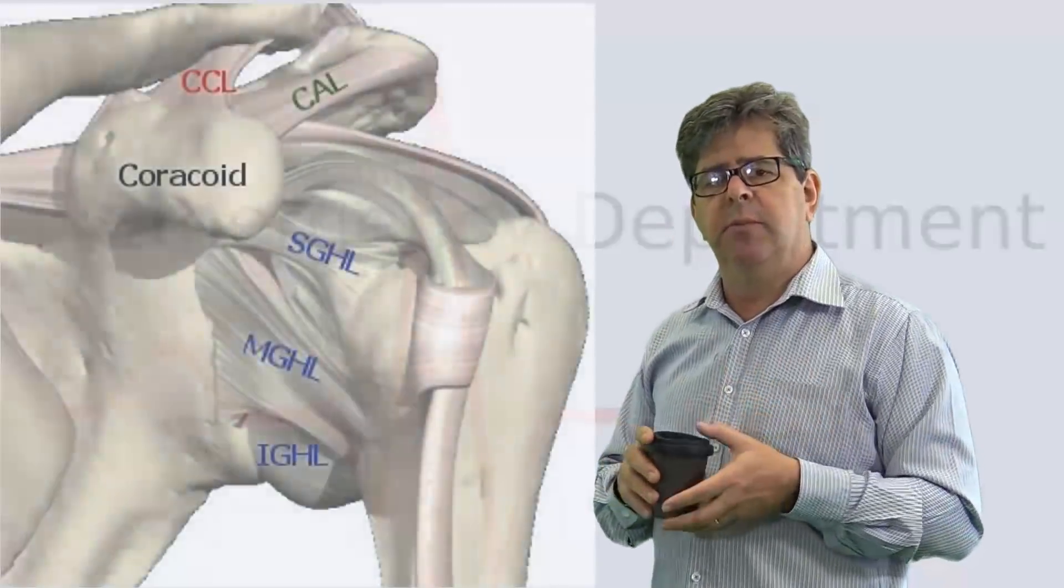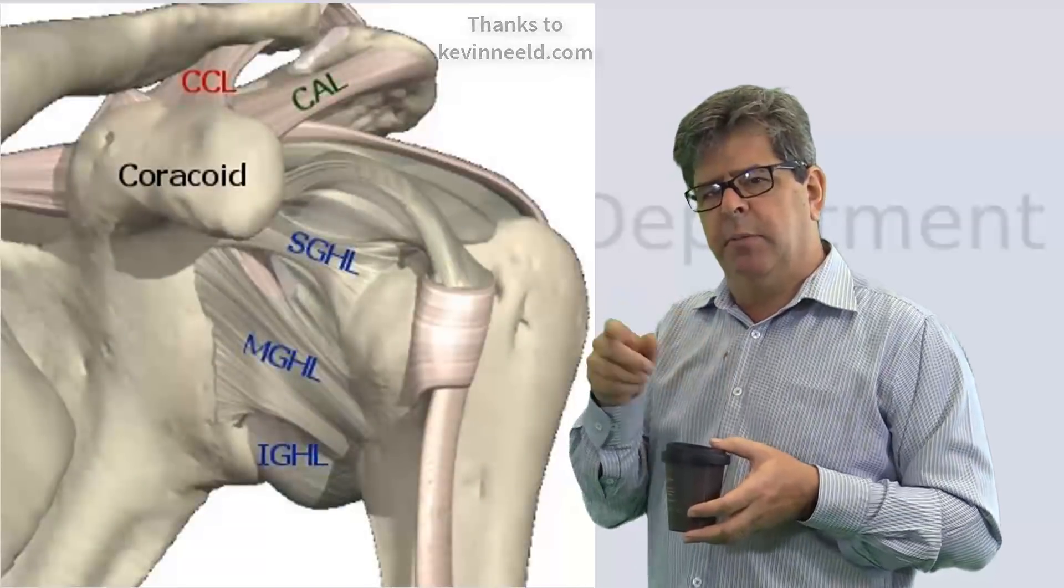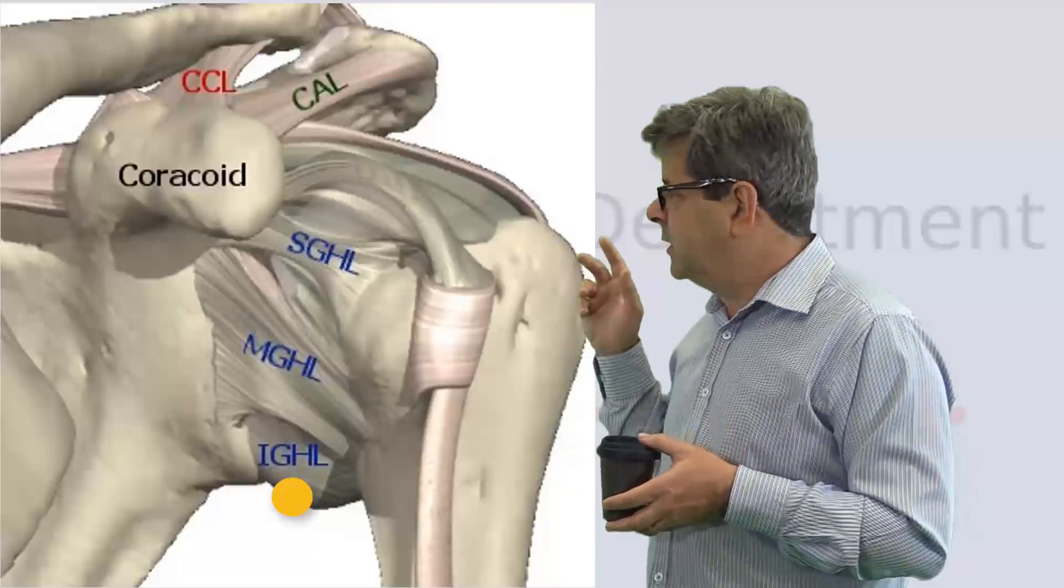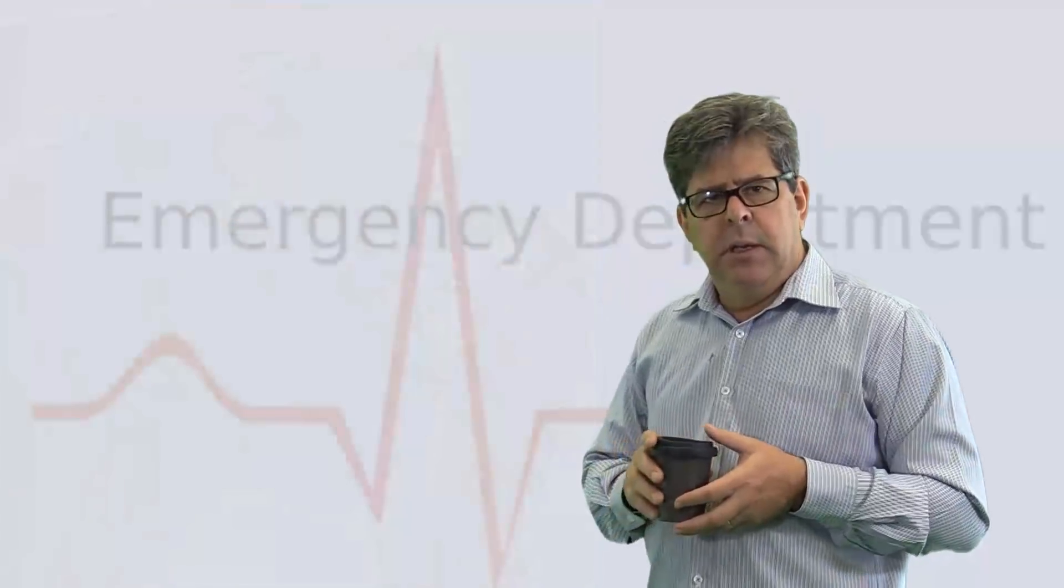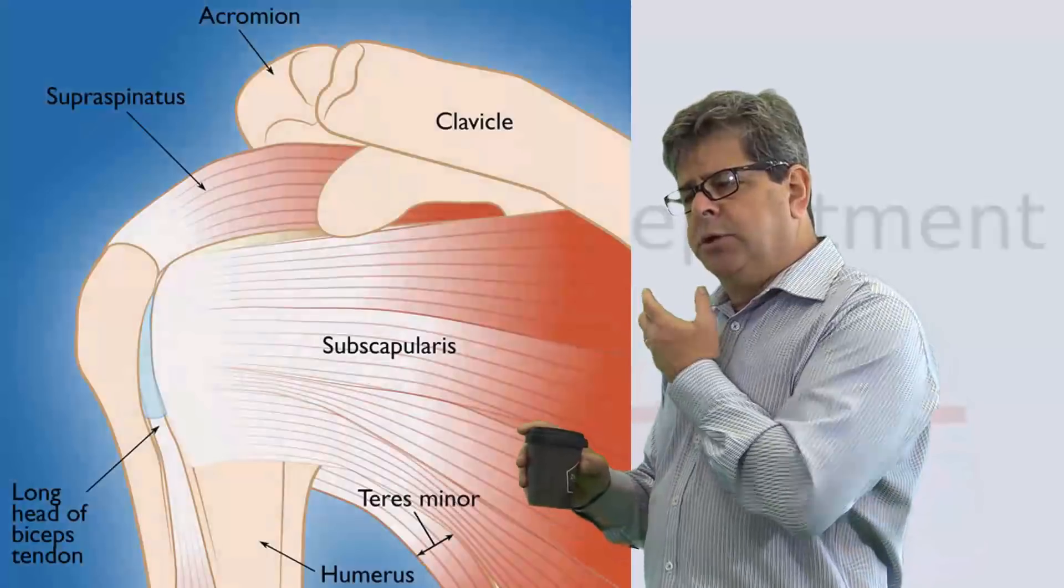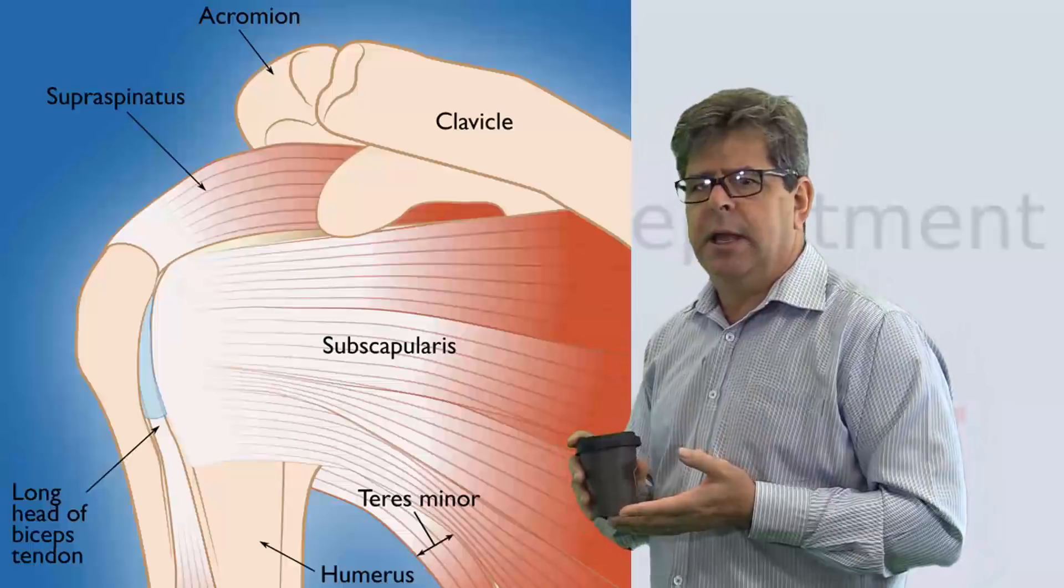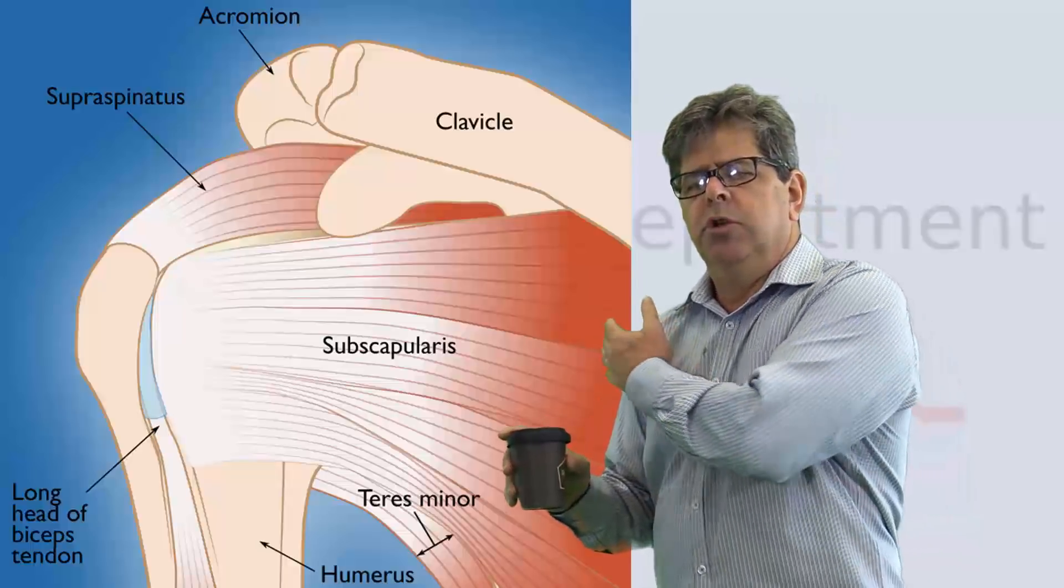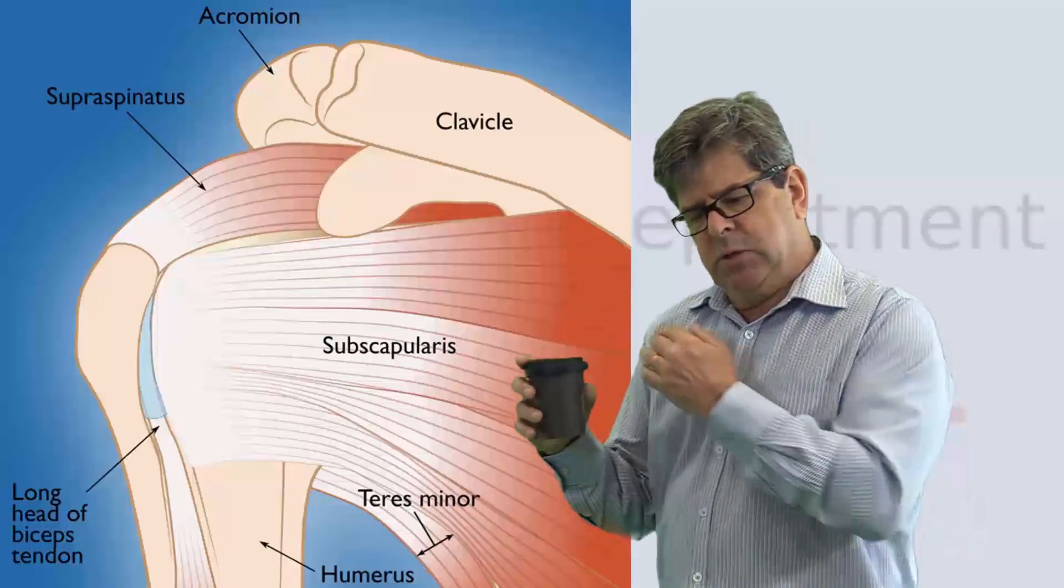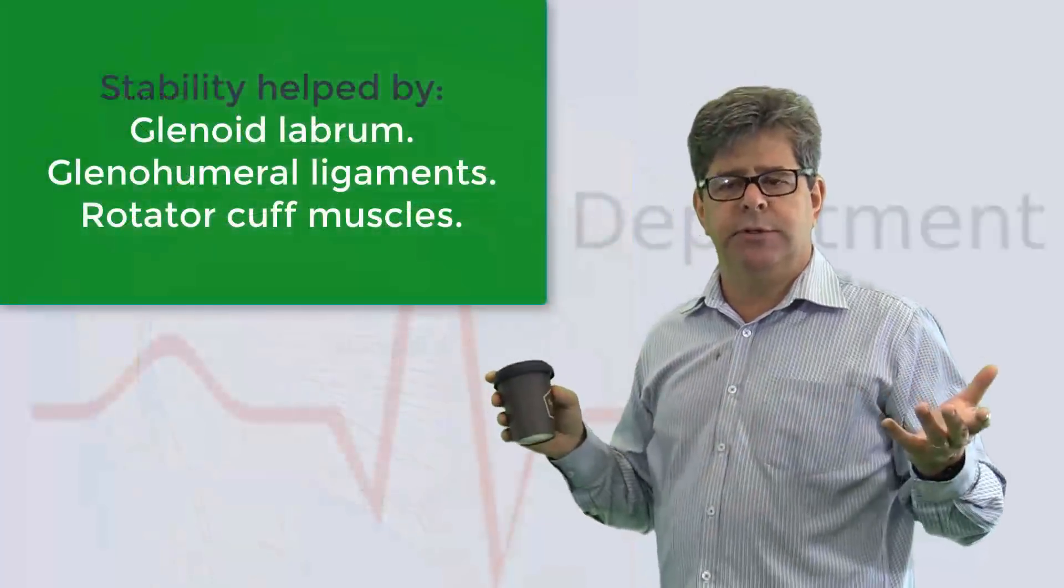Next, there's some glenohumeral ligaments anteriorly. The inferior - there's actually three of them for most people. Some people don't have the middle one. So superior, middle, and inferior, and the inferior is the most important, and you can see those ligaments there. The last and really very important is that the rotator cuff muscles - remember they're the supraspinatus, infraspinatus, teres minor, and subscapularis. When you contract your deltoid, they contract at the same time and squeeze the humeral head into the socket. So these things are important for stability.